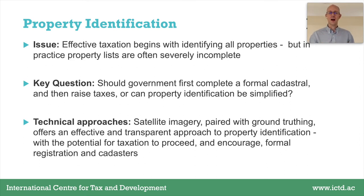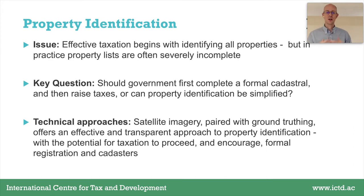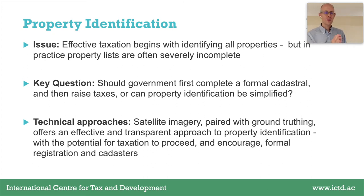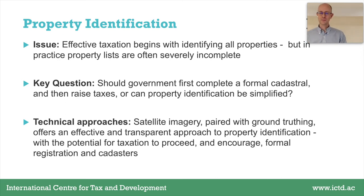The incompleteness of property registers can arise for several reasons. One is simply errors in efforts to build maps of properties — particularly likely in manual systems where certain properties may simply be missed. A second possible explanation is collusion between government administrators and property taxpayers, meaning properties are intentionally left out of registers to avoid taxation. A third possibility is that property registers may simply become out of date over time, as at one point there's a complete register in place, but as new properties are built, they fail to be added, such that earlier properties pay taxes but newer ones do not.